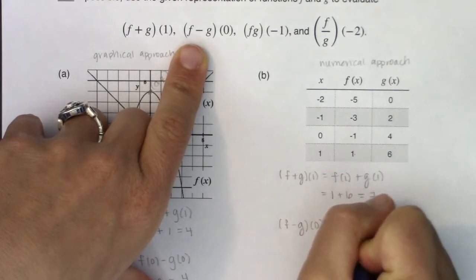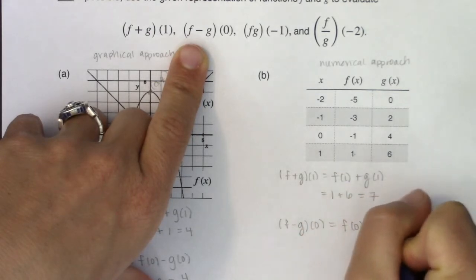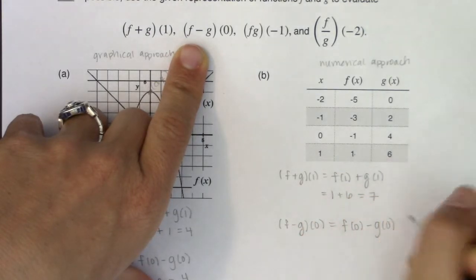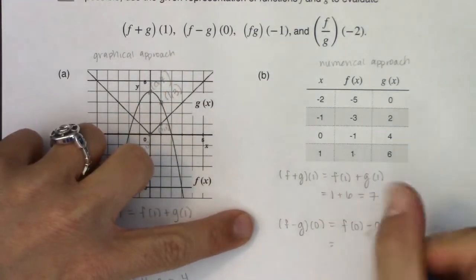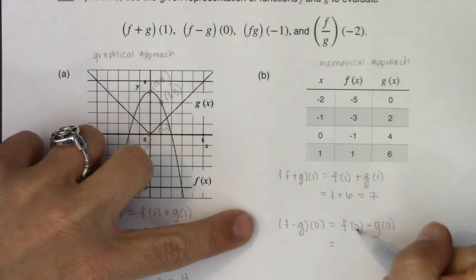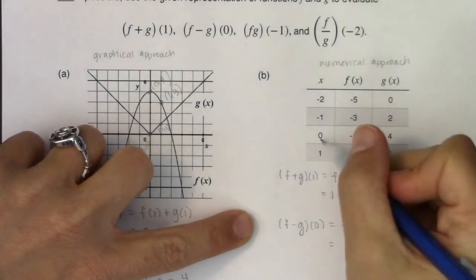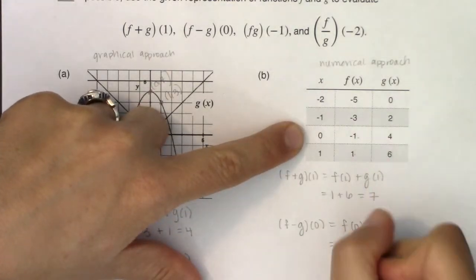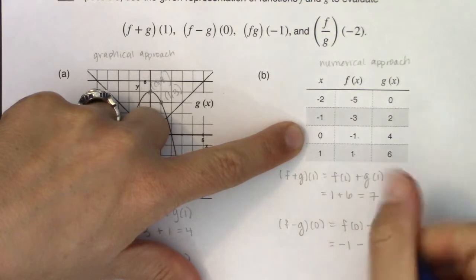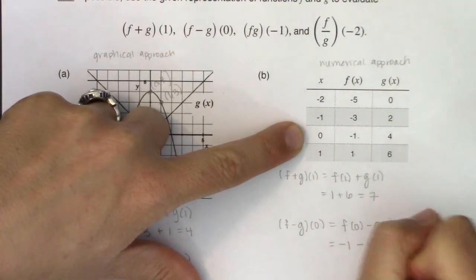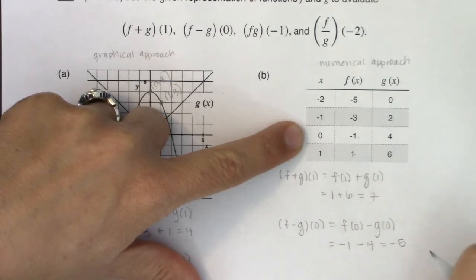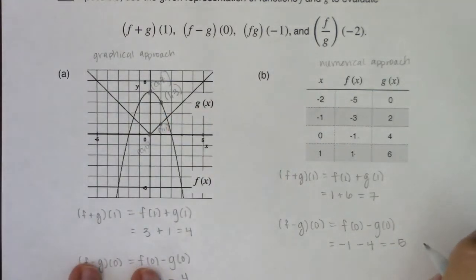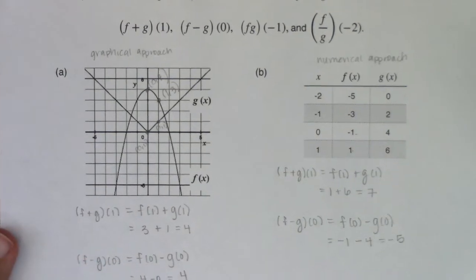The next quantity is f minus g evaluated at zero, which is f of zero minus g of zero. When x is zero, the function value for f is negative one and the function value for g is four, so ultimately this is negative one minus four, which is negative five.